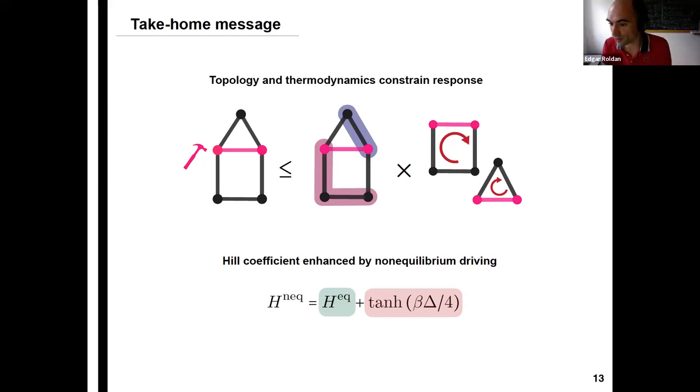Thank you very much for the talk. There's a question by David Sivak. Maybe you want to unmute. David? Sure, can you hear me? Yes, I can. Great. Really nice talk. I was just curious, this one over four factor appears everywhere in the tanh argument. Do you have any intuition for where that's coming from?